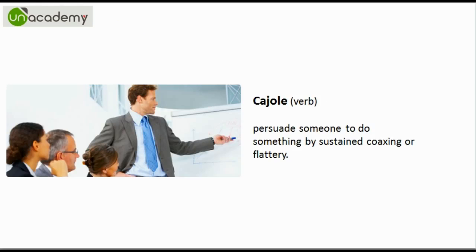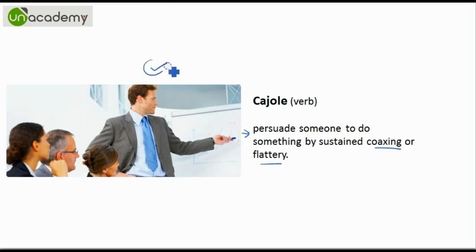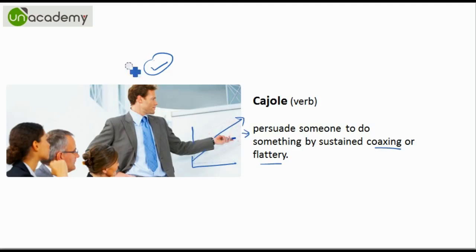The first word is Cajole. The formal meaning for Cajole is to persuade someone to do something by sustained coaxing or flattery. As you can see here, a person is trying to convince the bosses or the customers about something on the chart. So that is how you can relate to the word Cajole — it is the process of persuading someone.